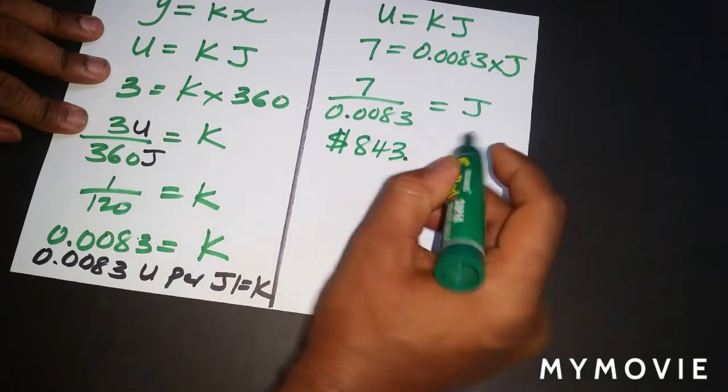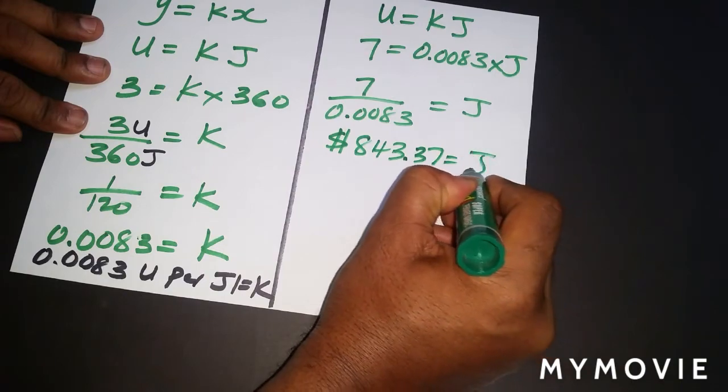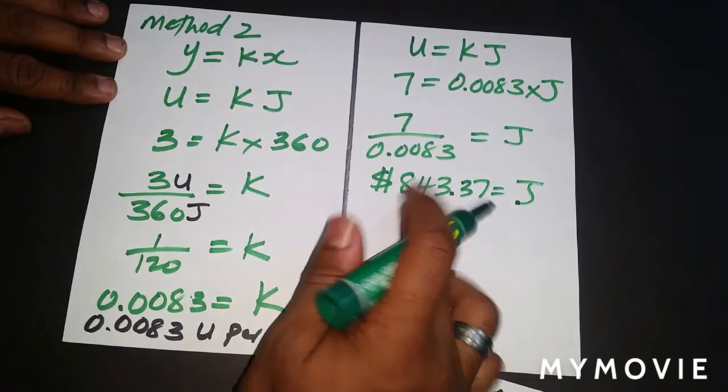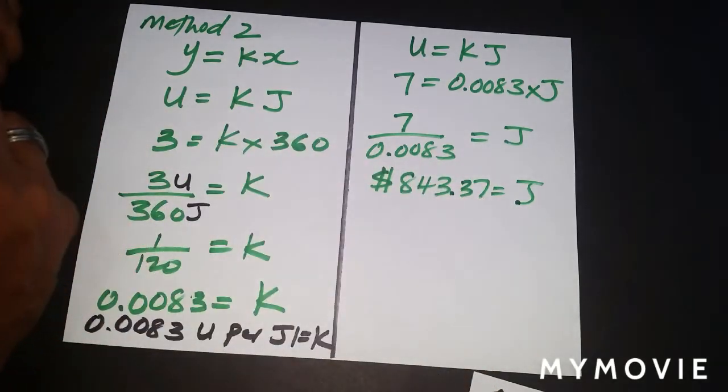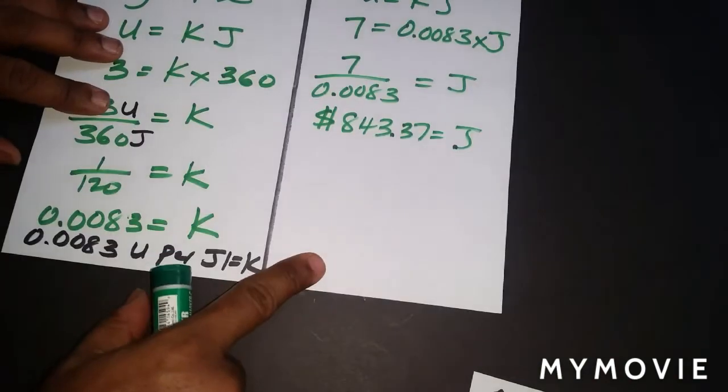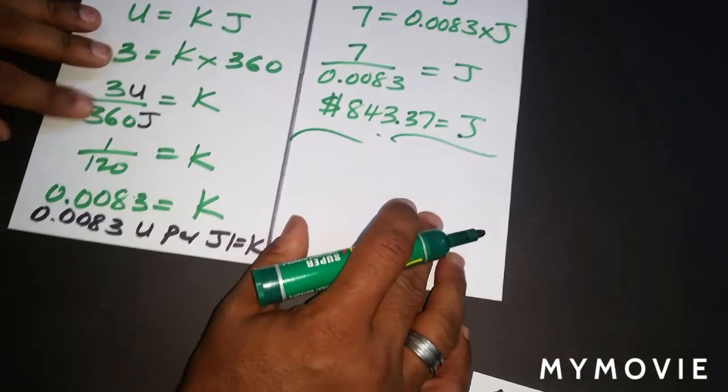In this particular case, what we would have is 843.37 Jamaican. We got 840 here, and the only reason there's a difference here is because I rounded off. So if I had stuck with this, I would get the 840. So let's see how that turns out if I use a fraction instead of decimal.